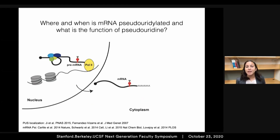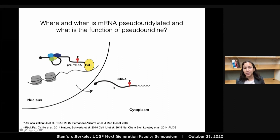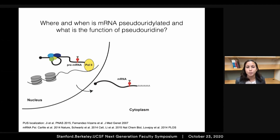Our lab identified pseudouridines in mature messenger RNAs. However, it wasn't clear when in the life cycle of the messenger RNA this modification is added, and the function of this modification in cellular messenger RNAs was unknown.